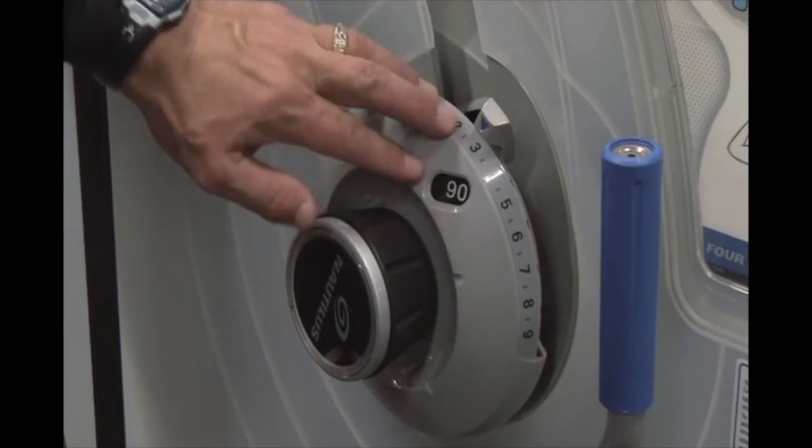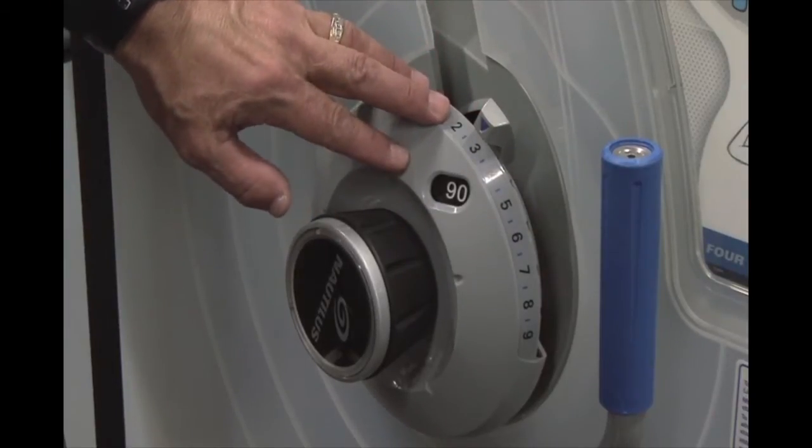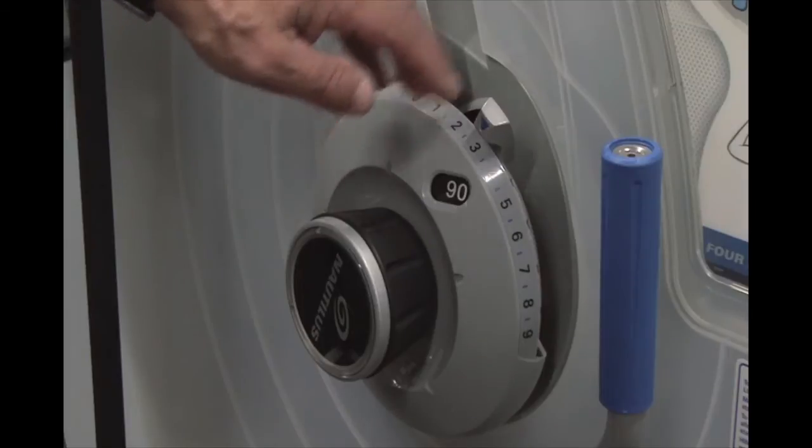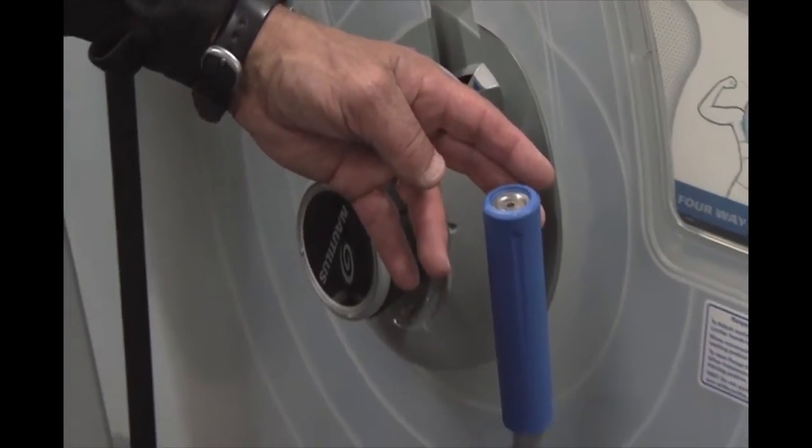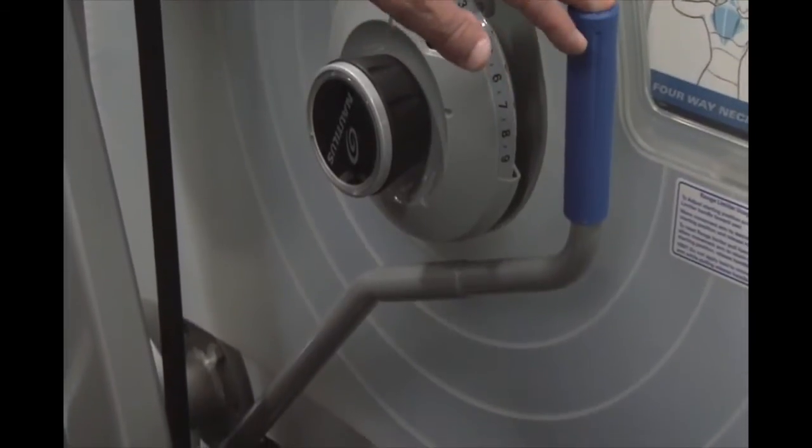In addition to having the 1-pound increment adjustments on all but the leg press, we also have the option of start point goniometric range of motion limits on all the Nautilus One products.